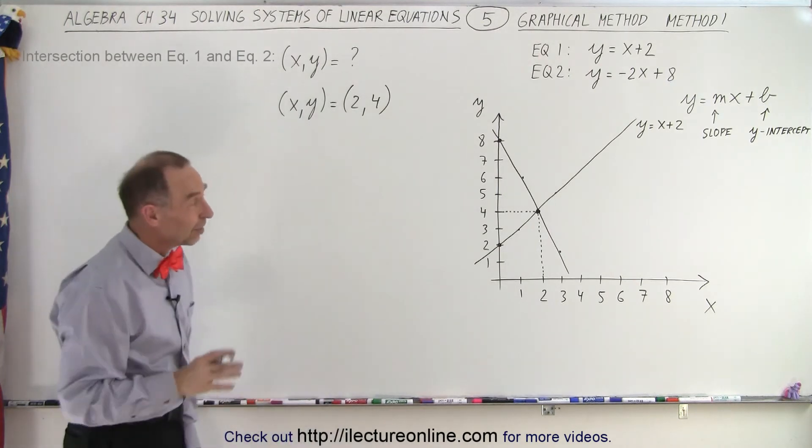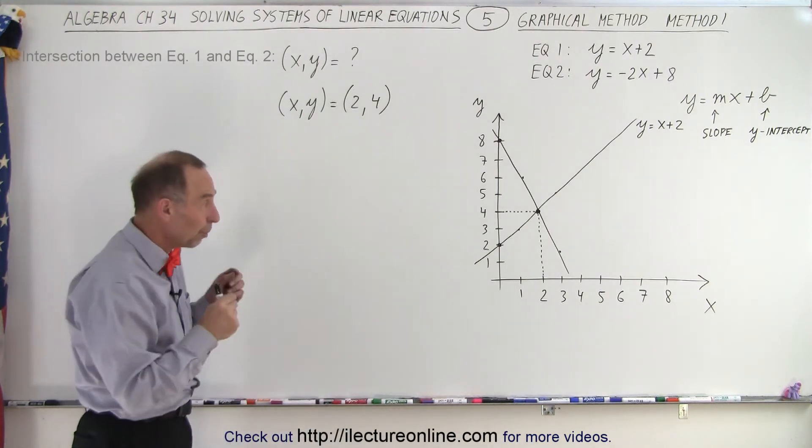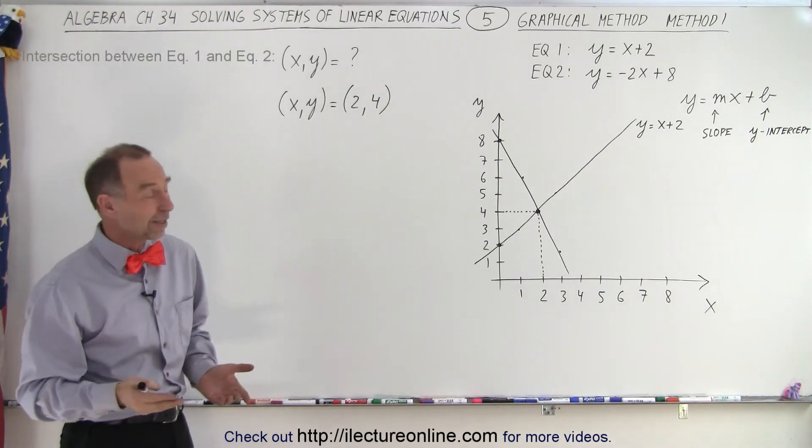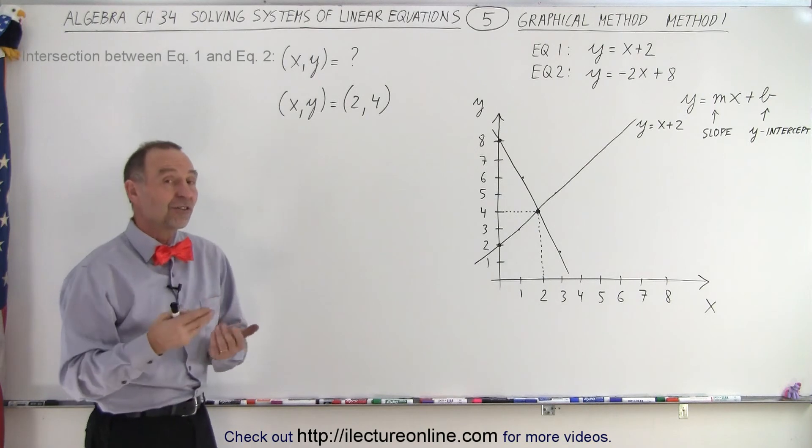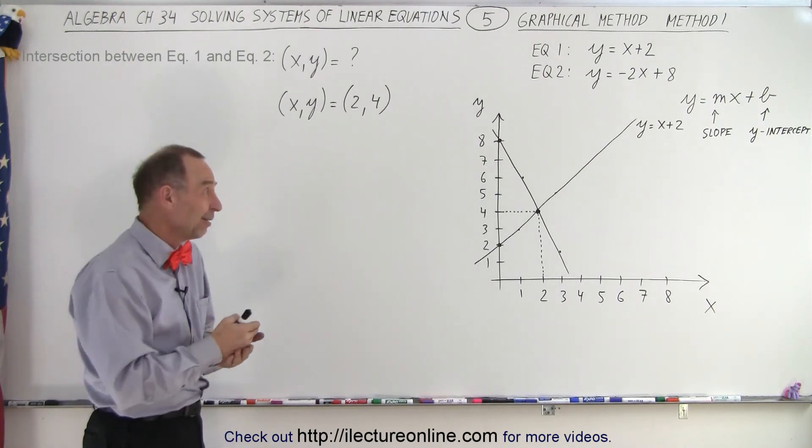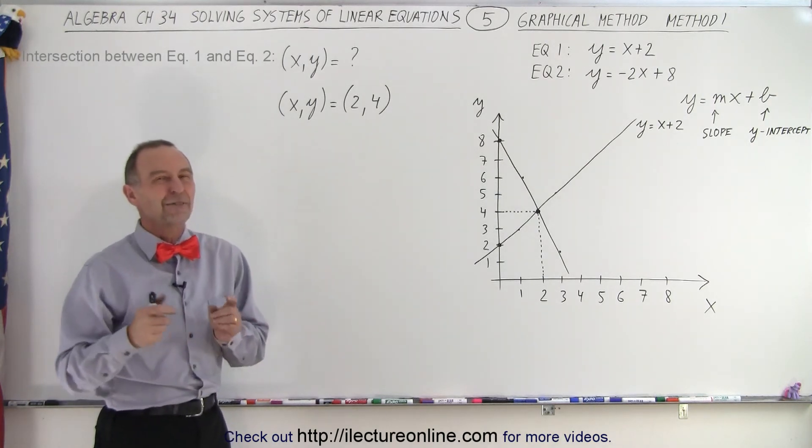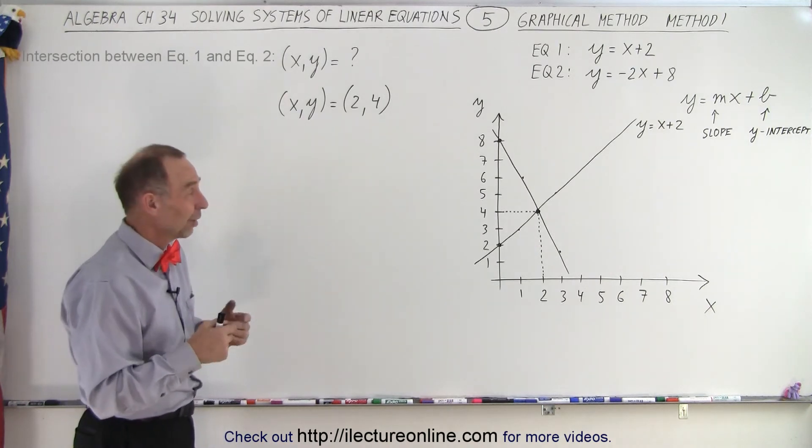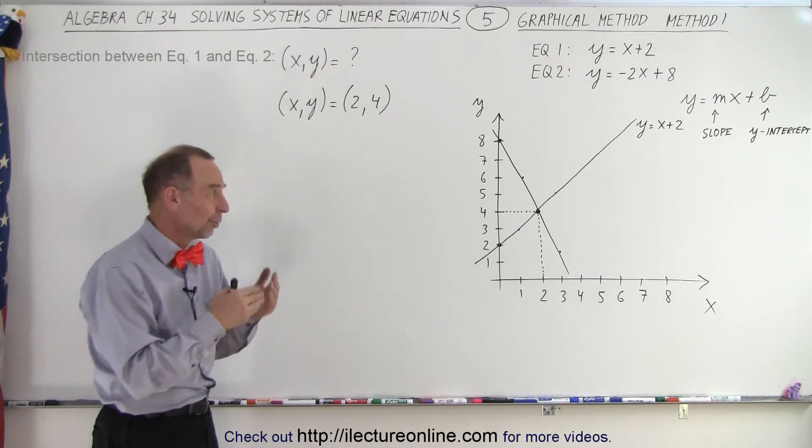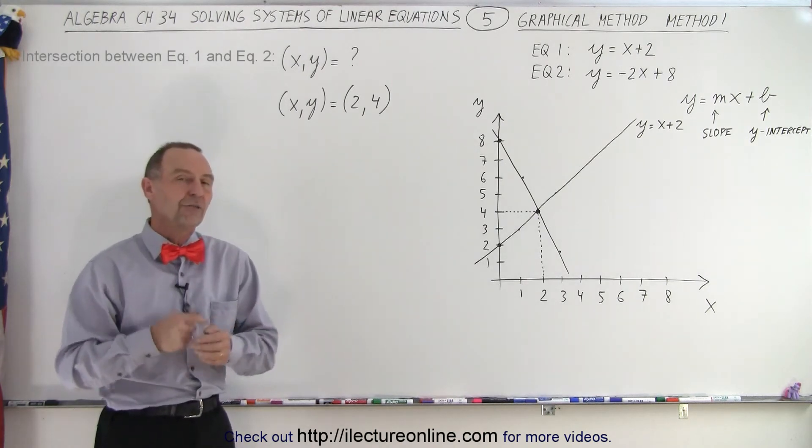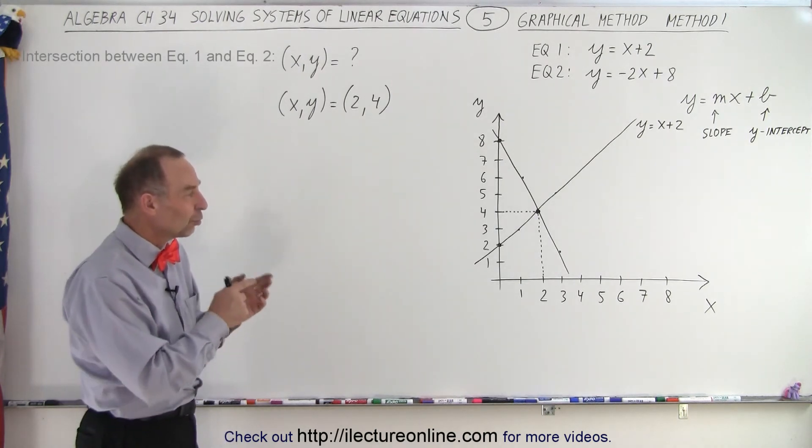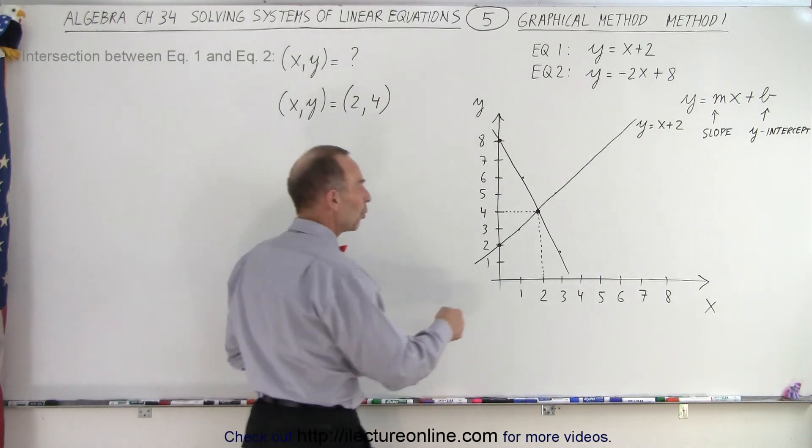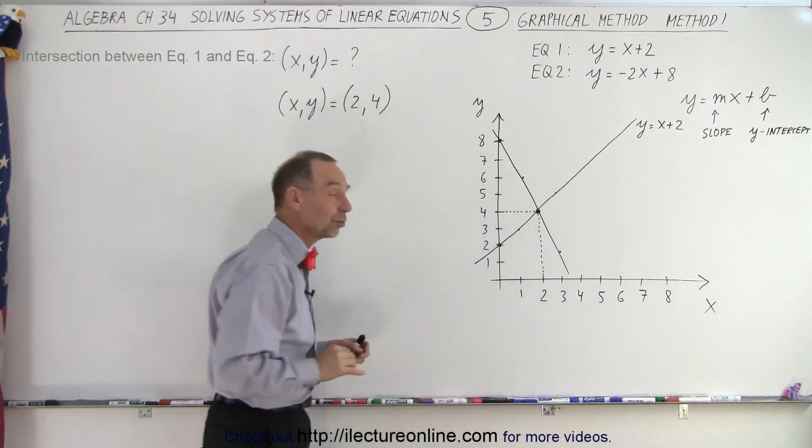You can see that this method is a quick method if the points have whole numbers. 2 and 4 are easy to find. But of course, if the point of intersection is 2.2 and 4.5, you may have a hard time figuring out exactly what the x and y-coordinates are of the point of intersection. So this works well when you have a clearly defined point of intersection where the x and y-coordinates are defined by whole numbers.